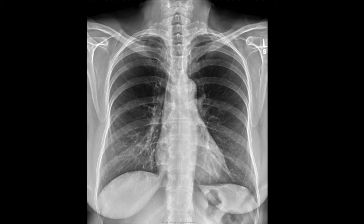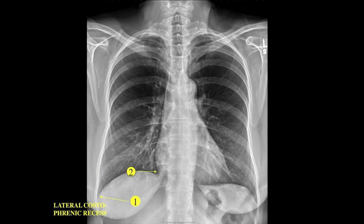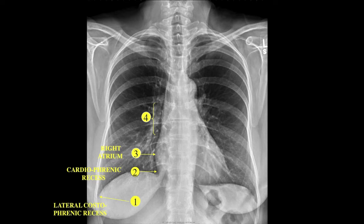PA radiograph of the chest — upright, and we know that because we have gas in the fundus of the stomach within a centimeter from the left diaphragm. Just to visit some of the important anatomical landmarks: the right lateral costophrenic recess, the right cardiophrenic recess, the border of the right atrium, and the right hilum, which is mostly vascular structures as seen on the PA radiograph. Lymph nodes are not usually visualized unless they're calcified or enlarged.